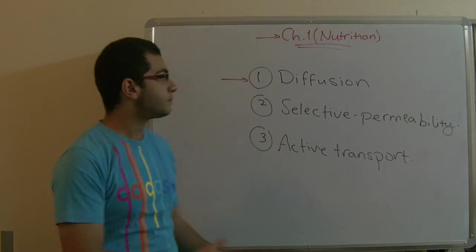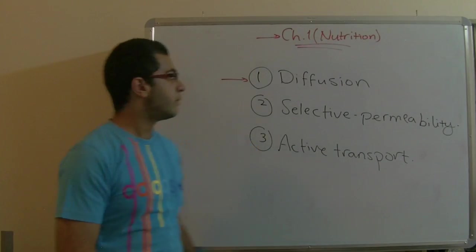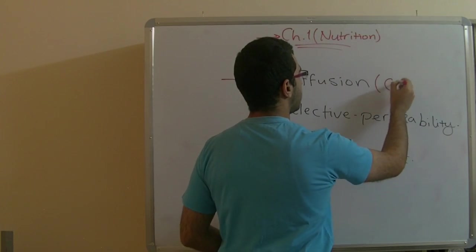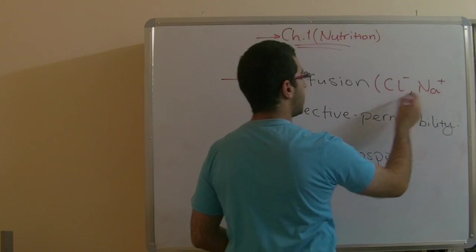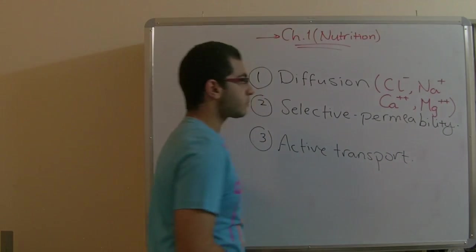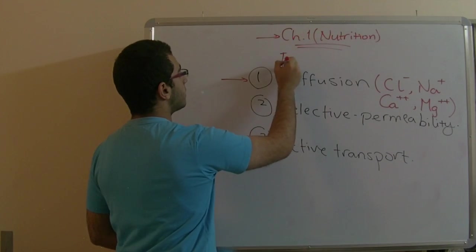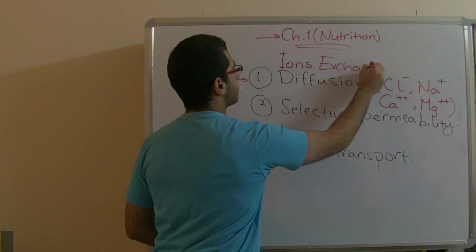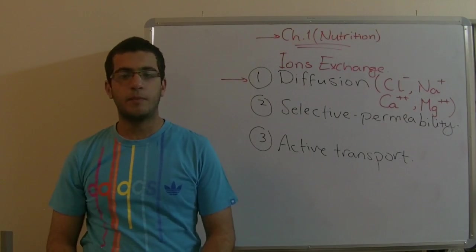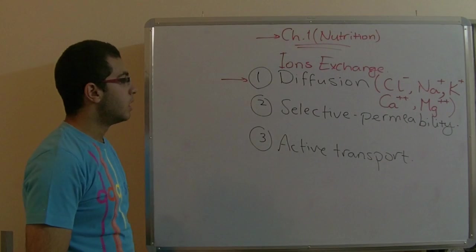Today we will also talk about ions specifically — the salt ions can move from the water medium to the inside of the plant. We have some positive and negative ions such as chlorine (negative), sodium (positive), calcium (2+), and magnesium (2+). In diffusion, ions exchange takes place; for example, a sodium ion may go outside the plant and a potassium ion (K+) replaces it.